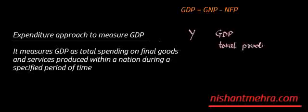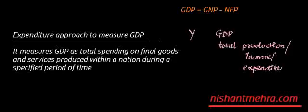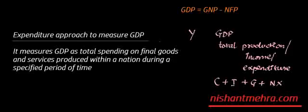Total production could be measured from the product side, it could be total income, or it could be total expenditure. The different expenditures are consumption, investment, some expenditure the government is going to make, some amount of expenditure made by foreigners on your production, and some amount paid by you on foreigners' production. So this gives us Y equals C plus I plus G plus NX, which is net exports.